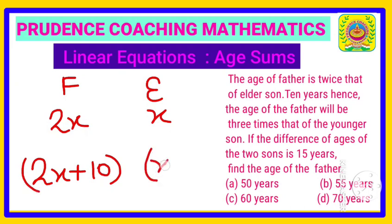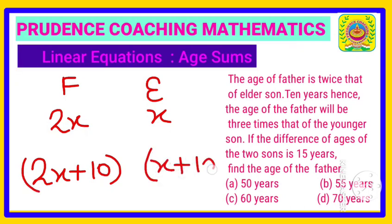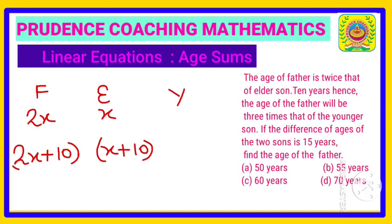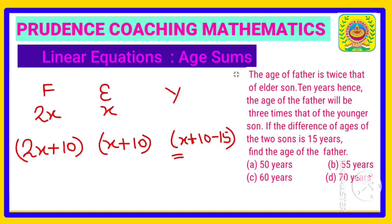After 10 years, the eldest son will be x plus 10. The youngest son is 15 years less than the elder one because their age difference is 15 years. So the younger son after 10 years will be the eldest son's age minus 15, giving us x plus 10 minus 15, which equals x minus 5.